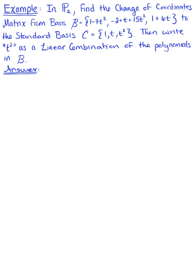In the set of all polynomials P sub 2, find the change of coordinates matrix from a basis B to basis C, the standard basis, and then write t squared as a linear combination of the polynomials in basis B.